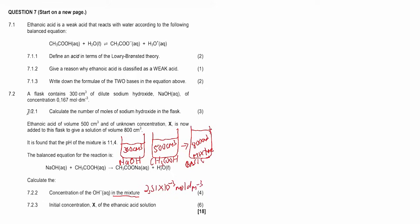From question 7.2.1, we already calculated that the number of moles of sodium hydroxide in the flask before mixing was 0.05 mol. Now we need to calculate the number of moles of hydroxide ions in the final mixture after the reaction.